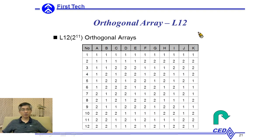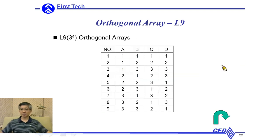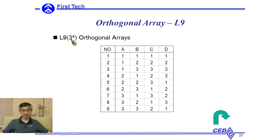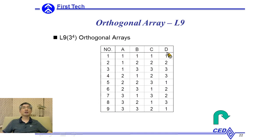L12 is another orthogonal array which can be used for eleven two-level factors — all factors are at two levels. L9 is an orthogonal array for three-level factors; it can be used for four three-level factors A, B, C, D, each with three levels, and there are nine experiments in total. For each treatment — each row — the first treatment has A at level one, B at level one, C at level one, and D at level one, and the remaining treatments are assigned according to the orthogonal array.